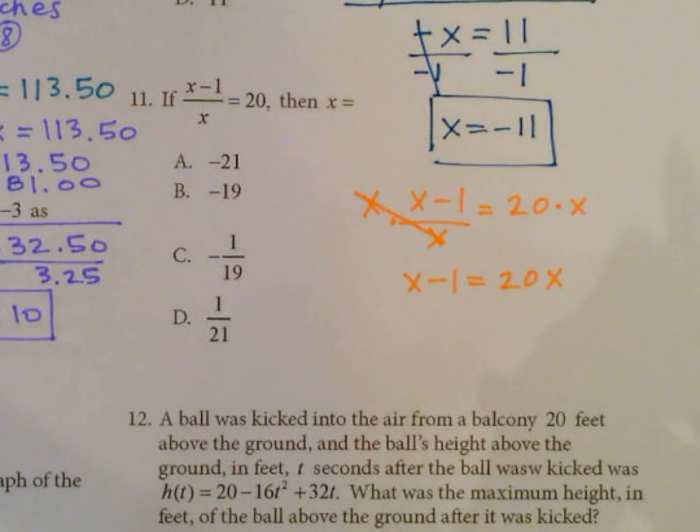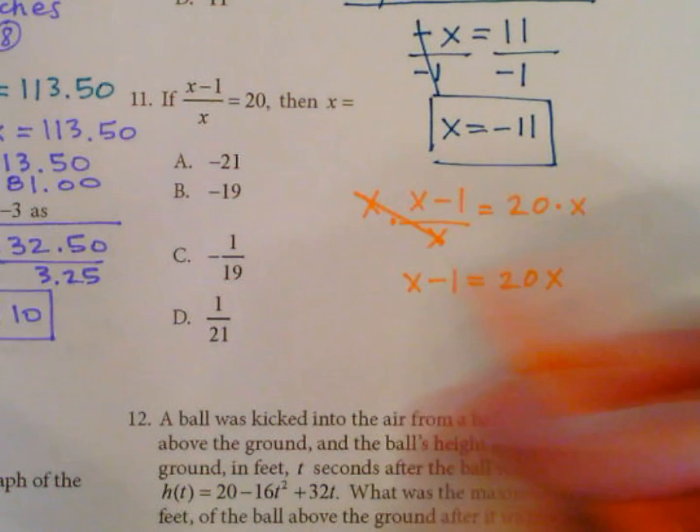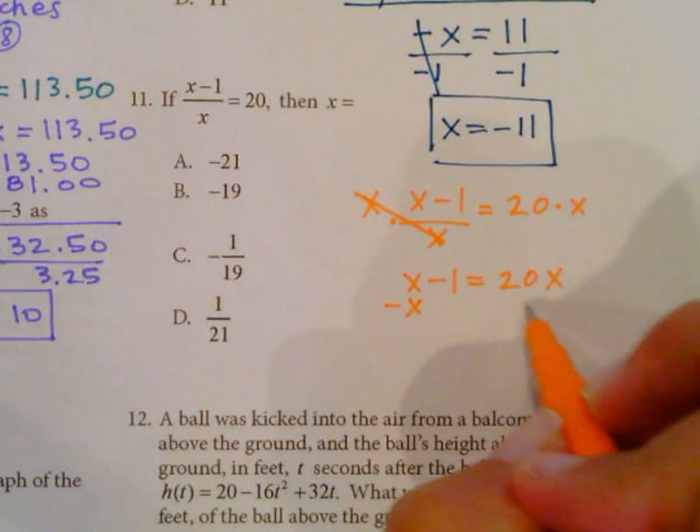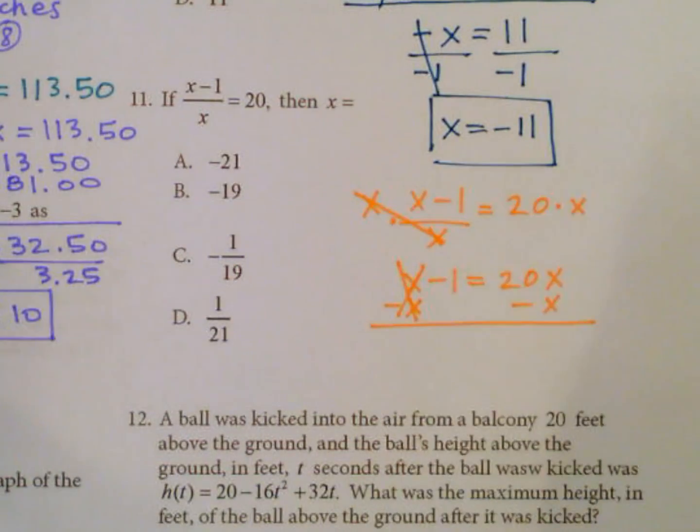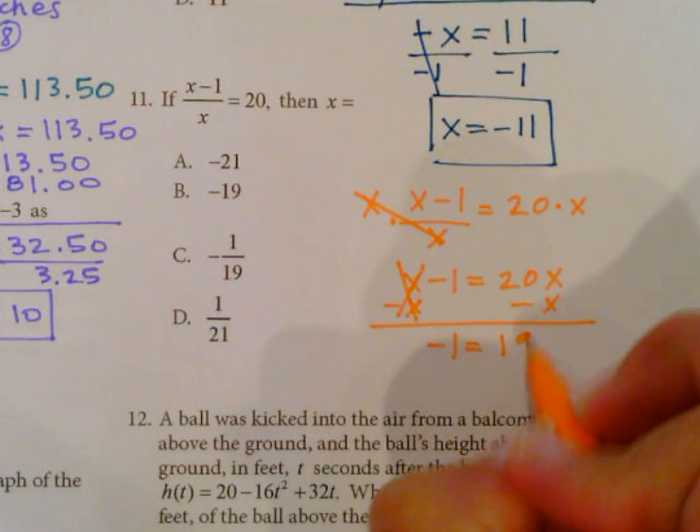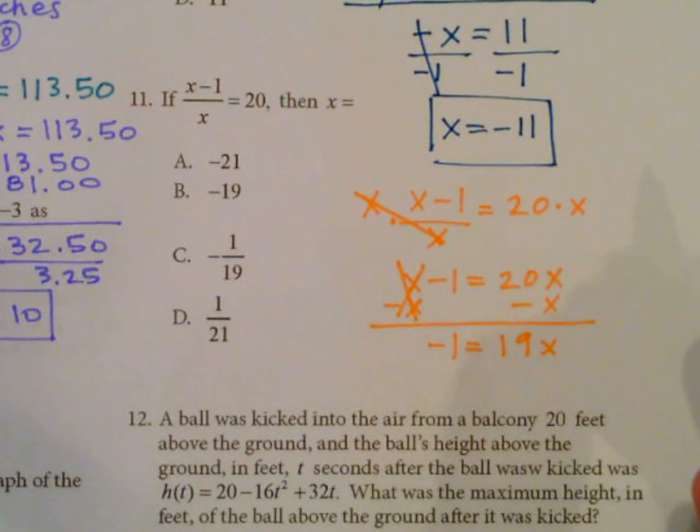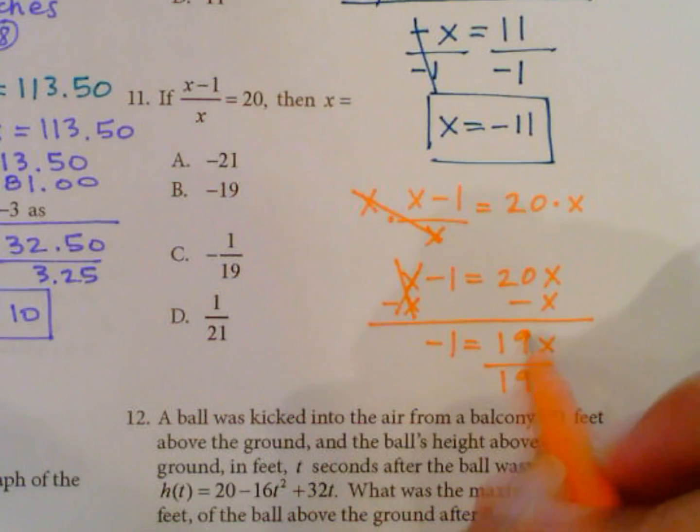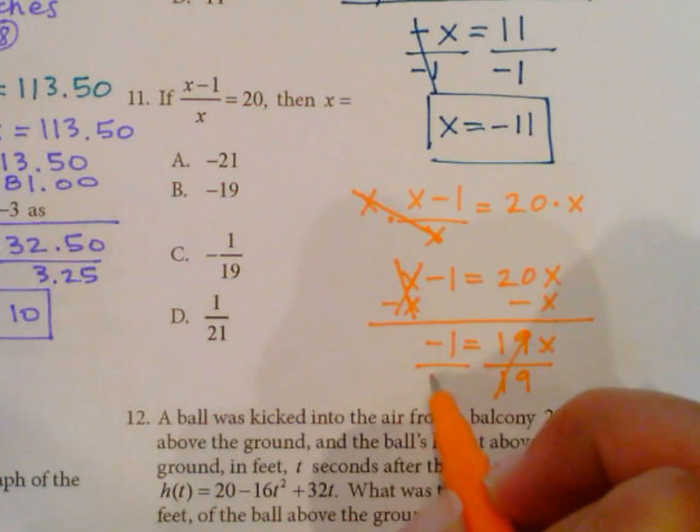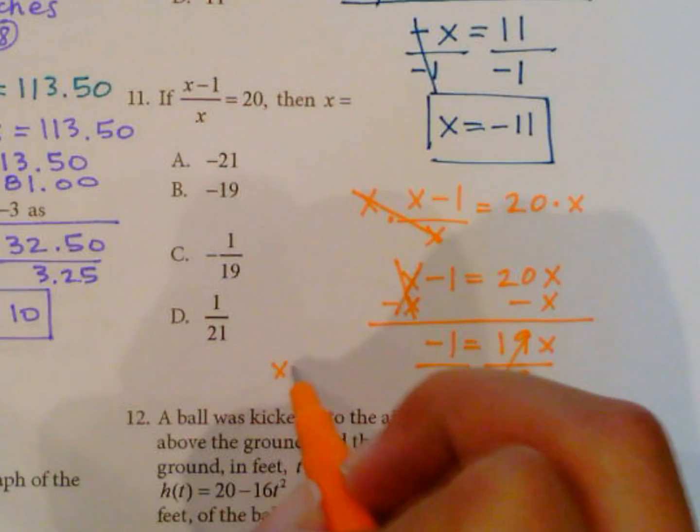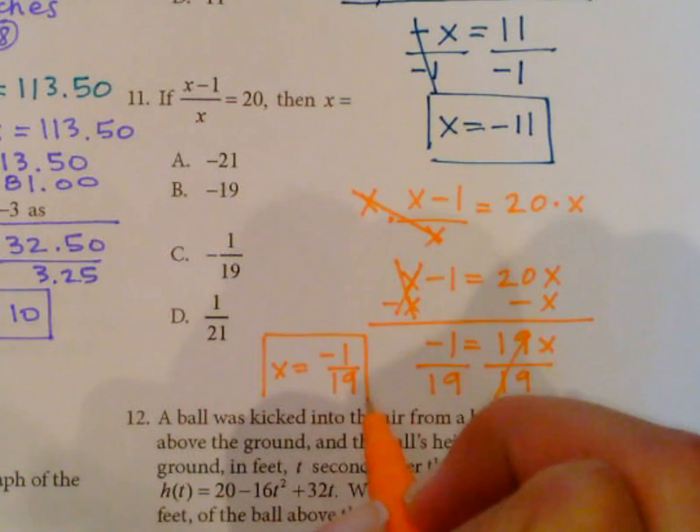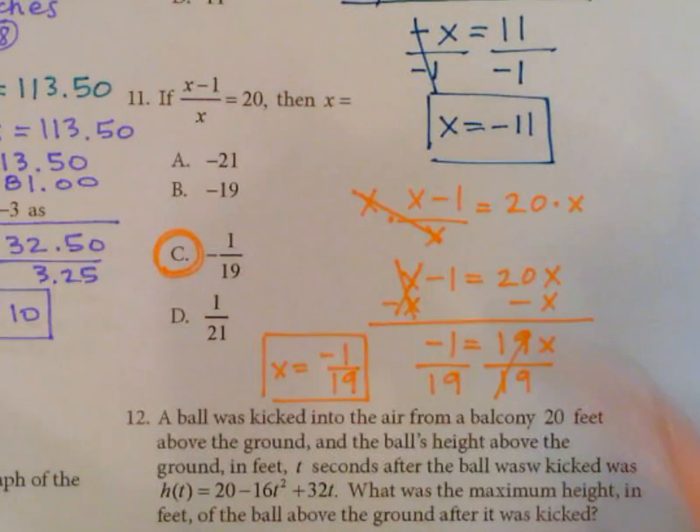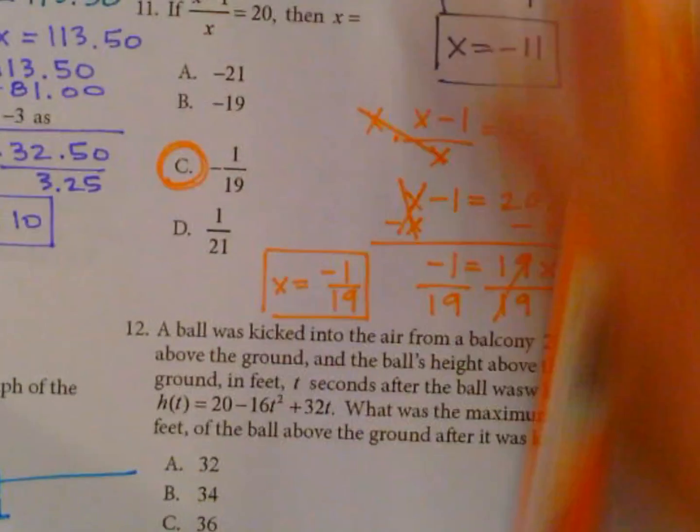I need to get the x's all together on one side, so I'm going to subtract x here, subtract x or 1x. This eliminates that, equals zero. Negative 1 equals 19x. Now to get x by itself, I just need to divide by 19 to reduce that to 1x and divide by 19. So x equals negative 1 over 19. Answer C.